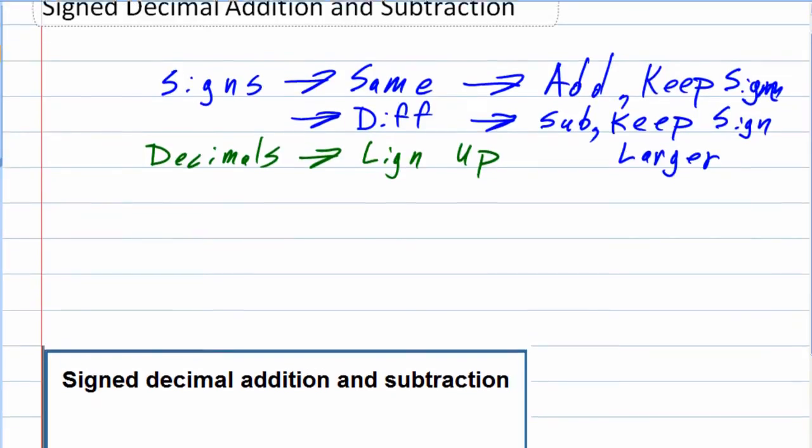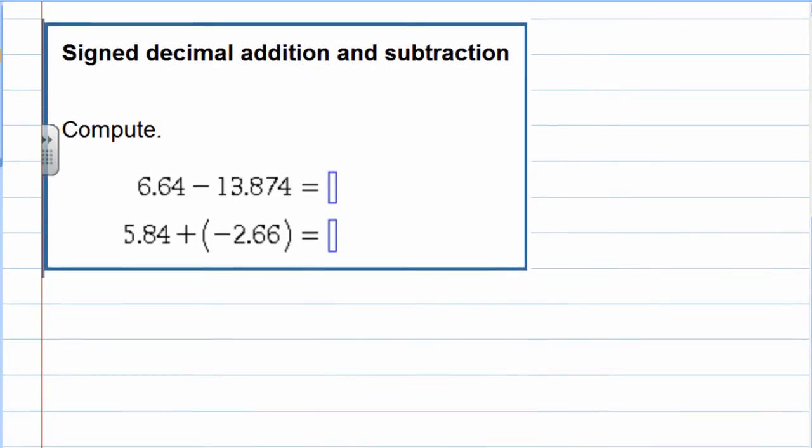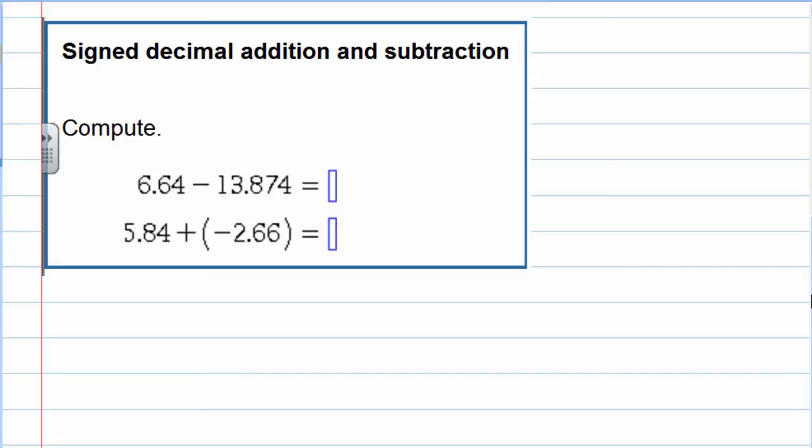So let's take a look at our examples here. We're asked to compute a couple of things. First of all, the top one, 6.64 minus 13.874. That's a subtraction problem, and for our rules, we prefer to think of it as addition of a negative.